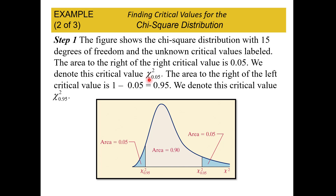We denote that critical value as chi-square sub 0.05. This is similar to what we did with z-scores and t-values — the subscript tells us about the area to the right of that value. The area to the right of the left critical value is the whole area (1) minus the area to the left (0.05), giving us 0.95. That's why it gets the subscript 0.95.